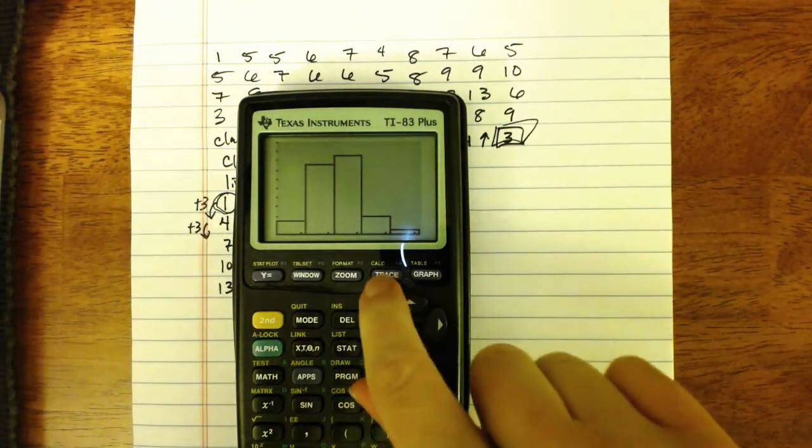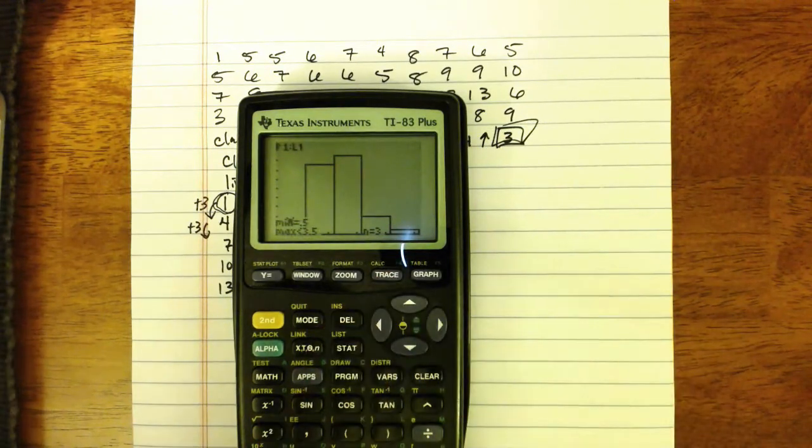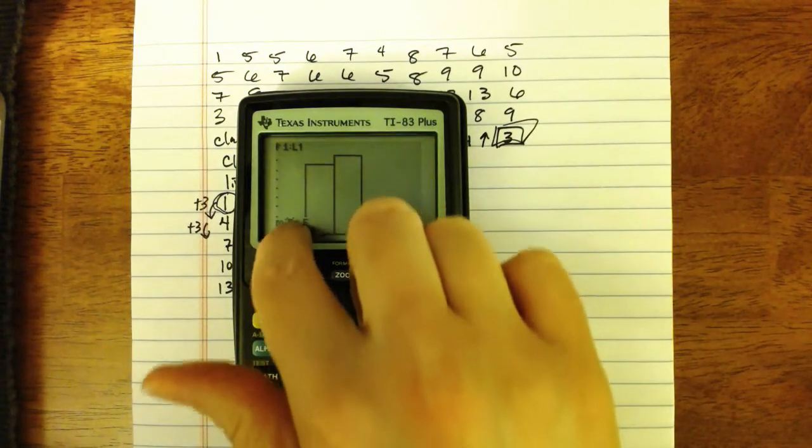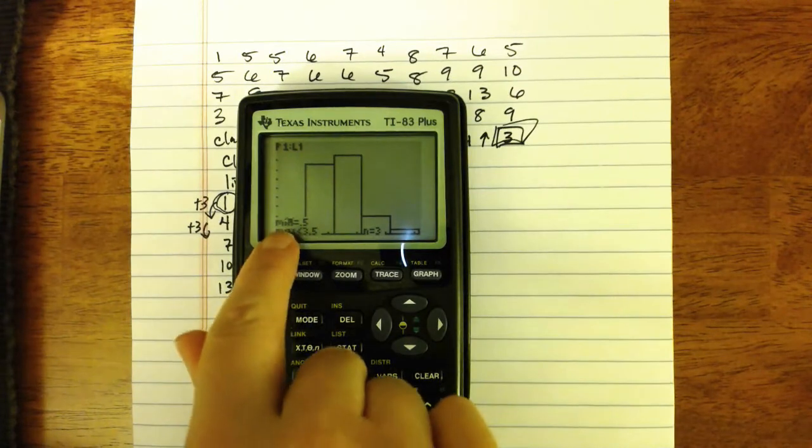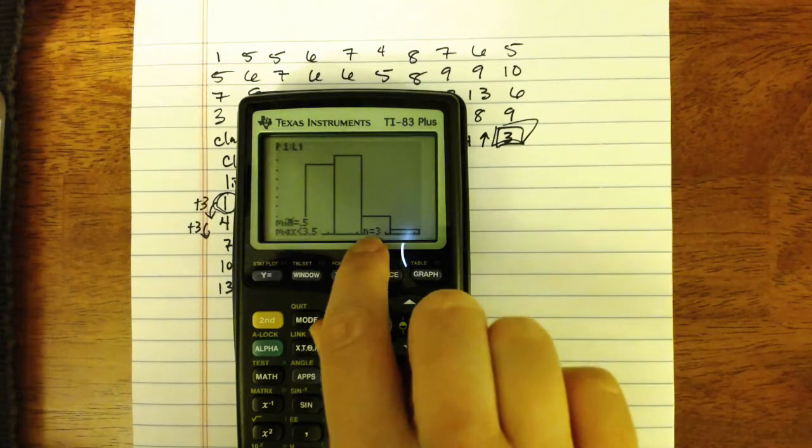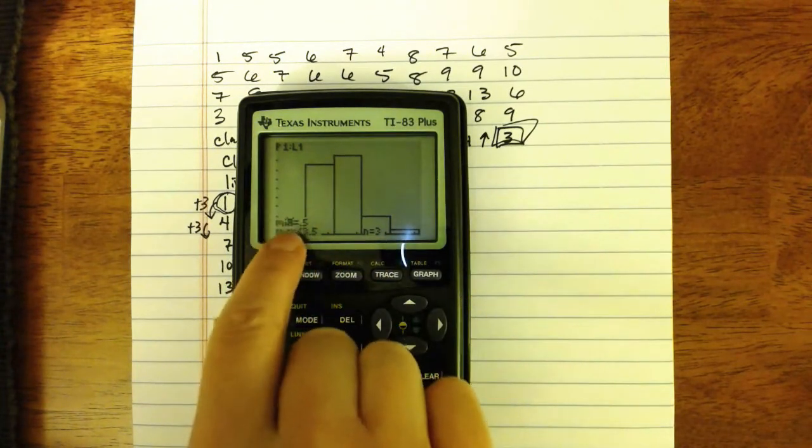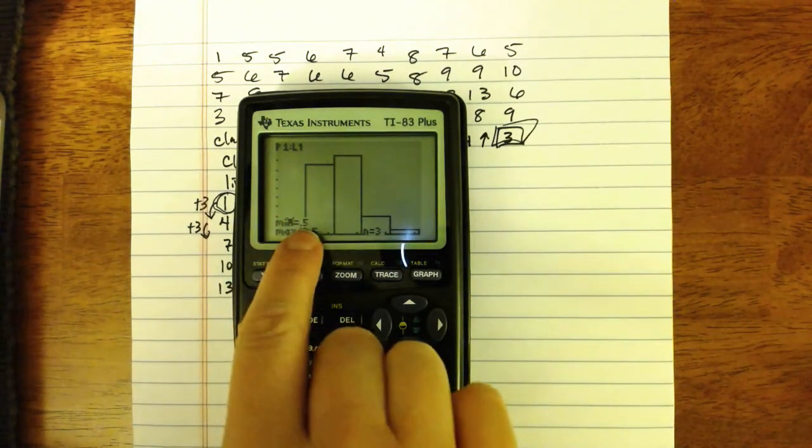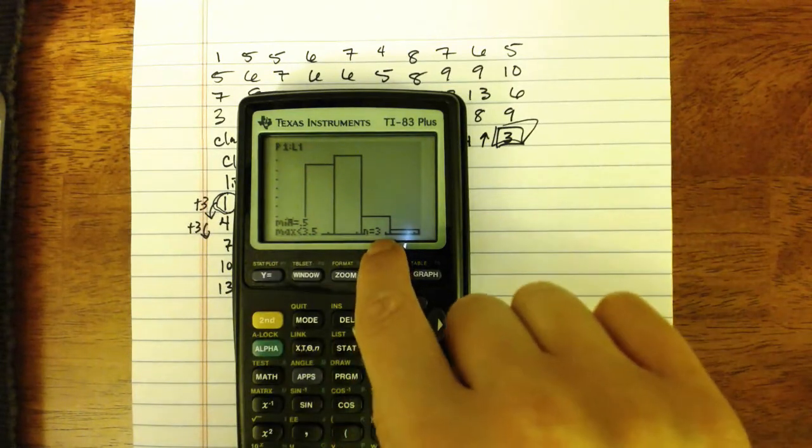What you don't get in this picture is you don't get to see what the increments along the axis are. But you can fix that by pressing the trace key. It will put a blinking cursor at the top of the first bar. It tells you that bar goes from 0.5 to 3.5. And it also says that N equals 3. So in that first category from 0.5 to 3.5, we had three pieces of data.